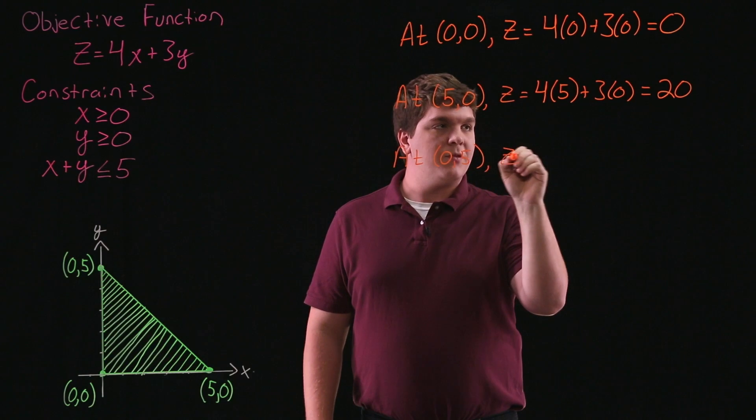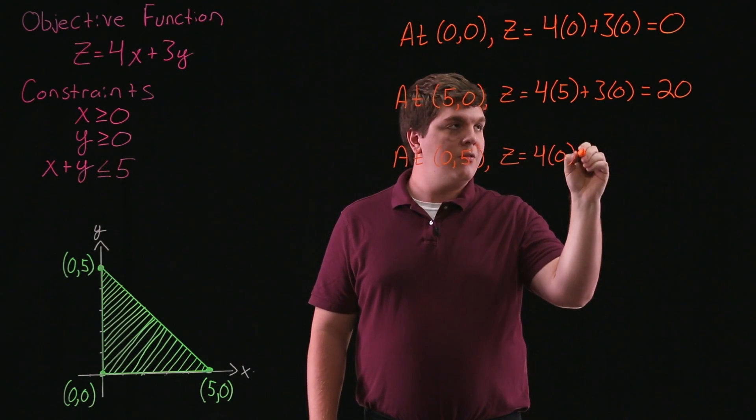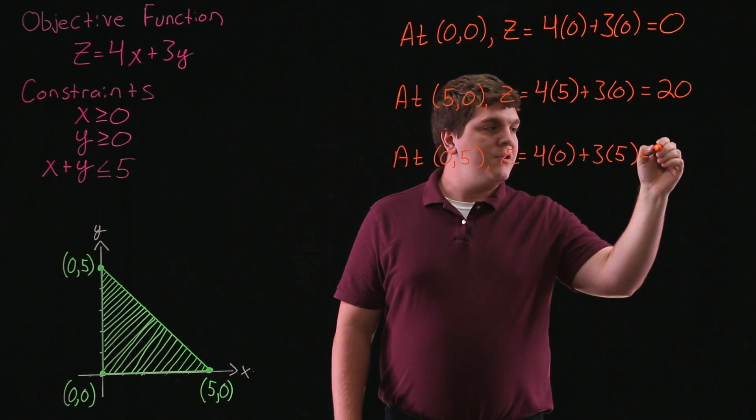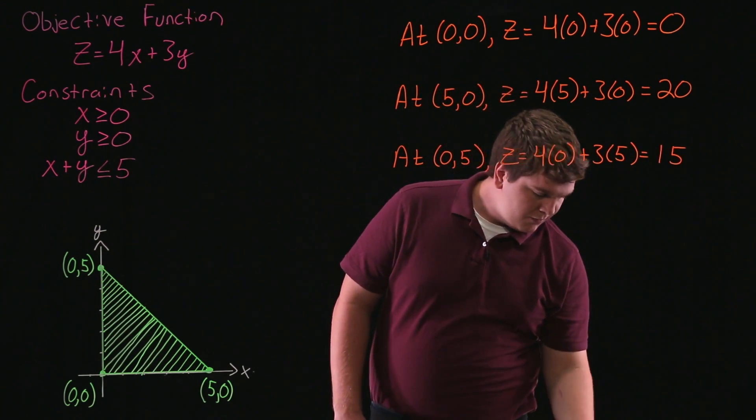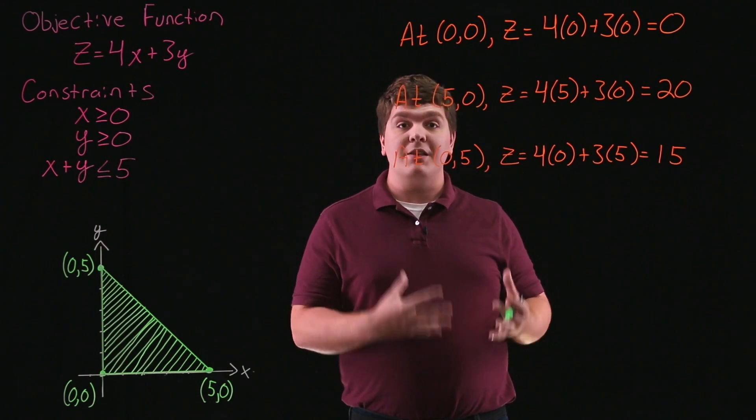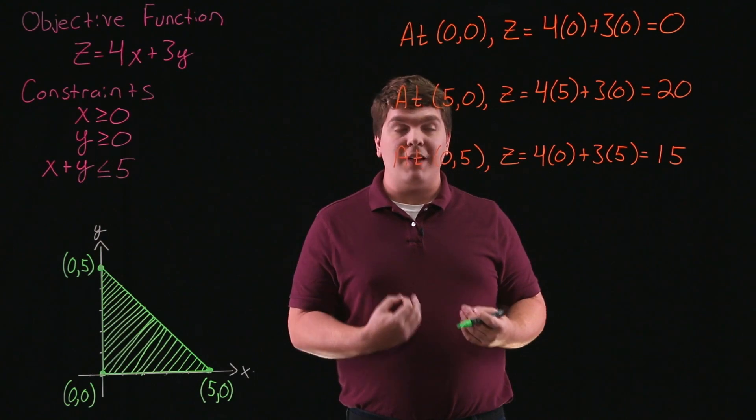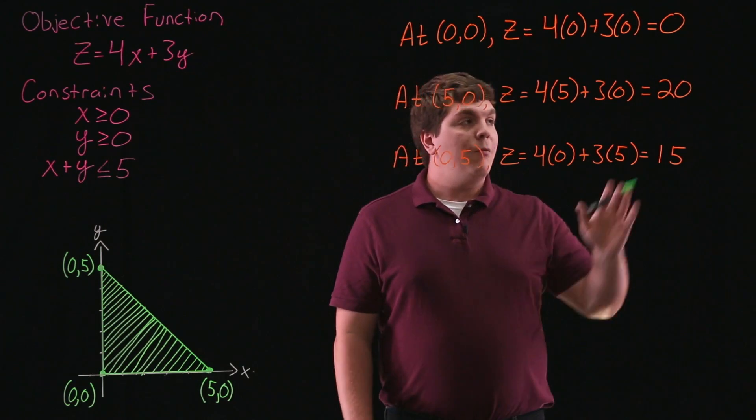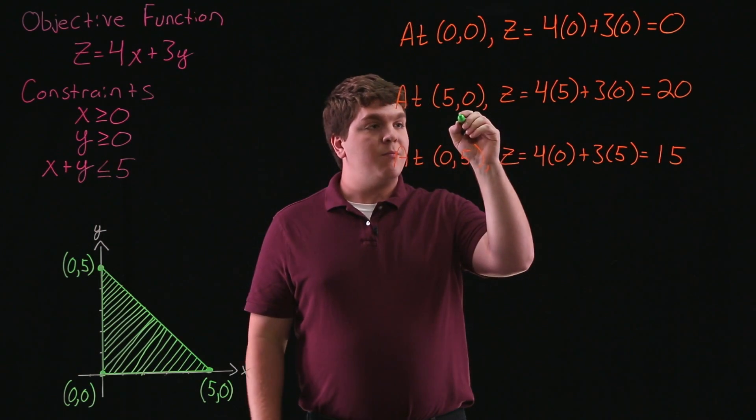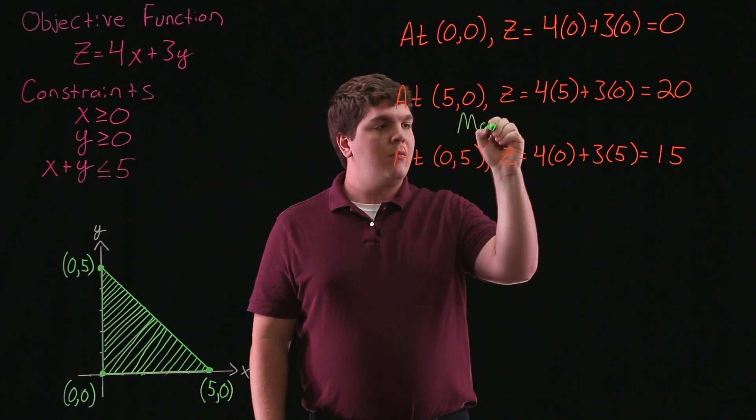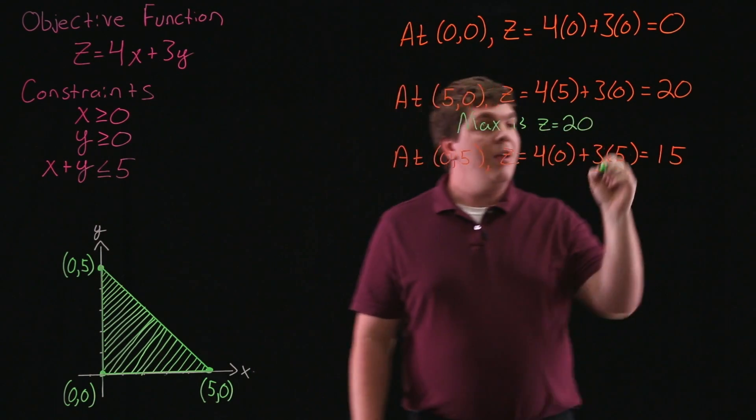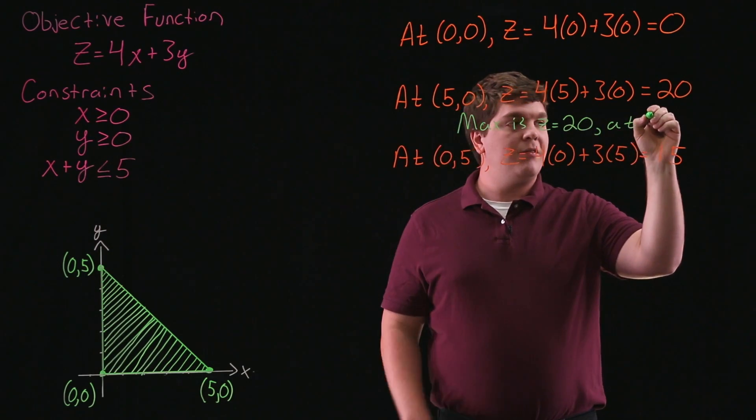As I said earlier, the largest of these values is going to be our maximum, and the smallest value is our minimum. And what we see is our largest value is 20. So our maximum is z equals 20, and this happens at the point 5, 0.